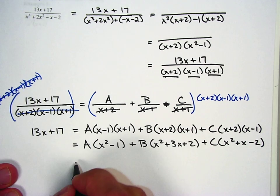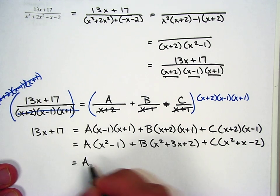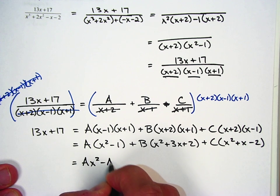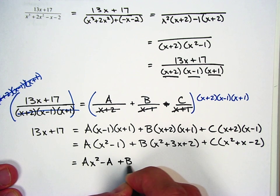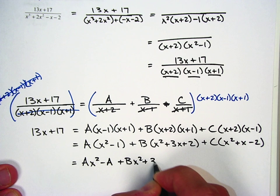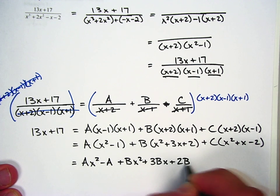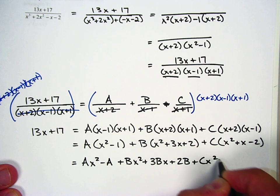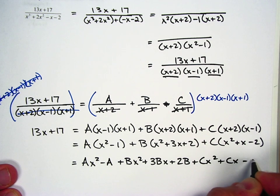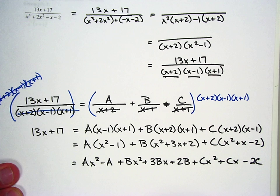And then distribute your coefficients or your capital letters. There's A x squared minus A, plus B x squared plus 3B x plus 2B, plus C x squared plus C x minus 2C.